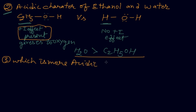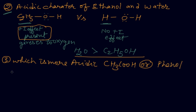The third and most important comparison is: which is more acidic — ethanoic acid (CH₃COOH) or phenol? We have already discussed phenol's resonating structures. When we break down ethanoic acid it is very interesting — we get the acetate ion.